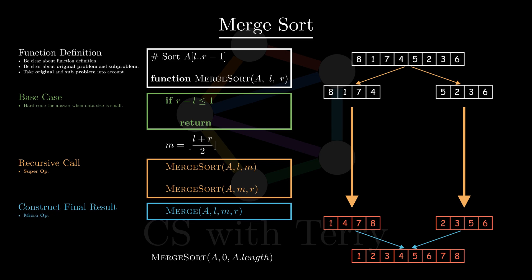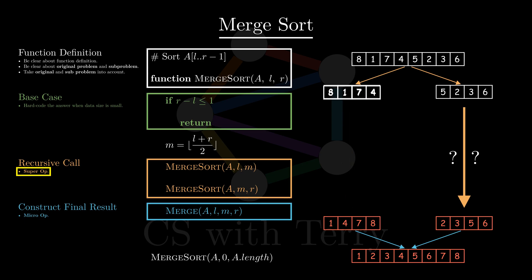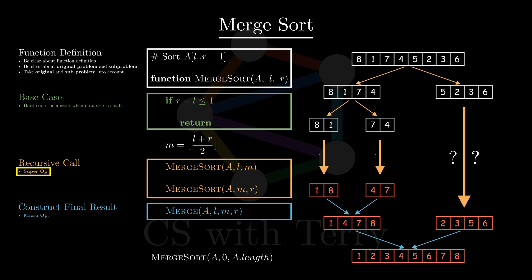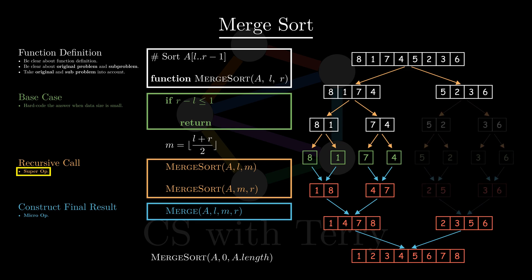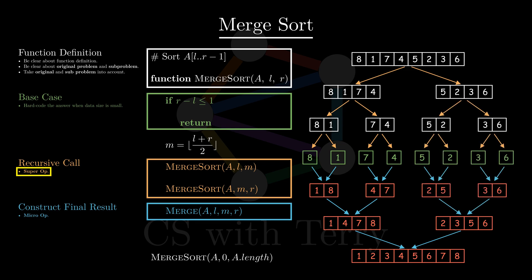Let's answer the question: why do designing recursive functions sometimes make our head spin? It's because of the super operations. The purpose of the super operation here is to sort the left and right subarrays. Since there are many nested operations within, we may doubt whether this super operation can complete its task, or whether the nested logic will go wrong. With this skepticism, we may try to explore the internal logic of super operations, think about the next level of recursion — continue to split and sort subarrays. If we keep doing this and try to untangle the nested logic, we may feel that recursive design becomes more and more difficult and get more and more confused.